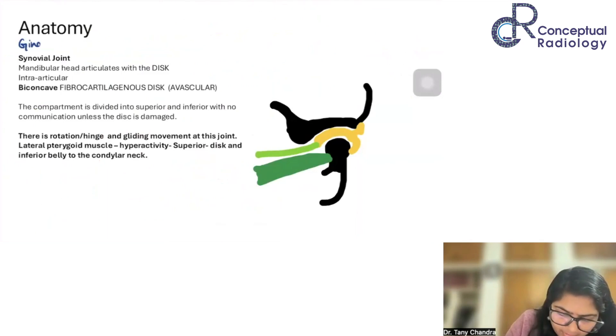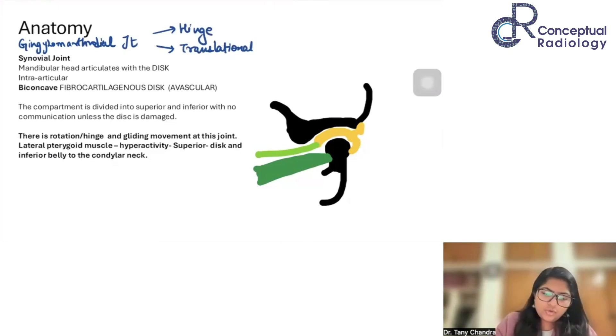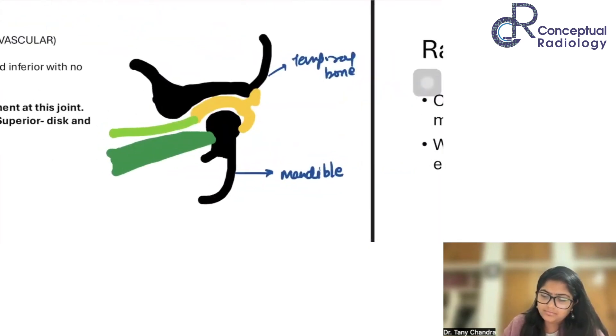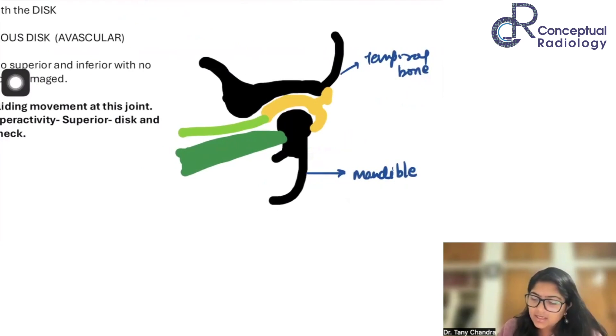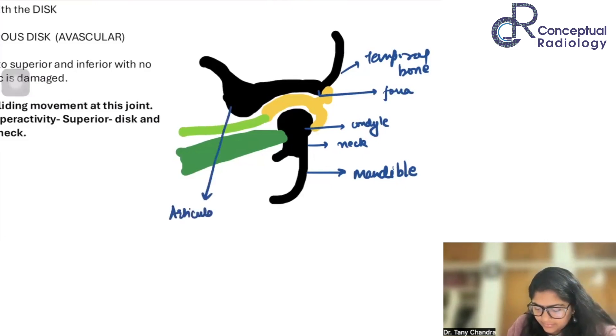This is a gingiloarthrodial joint. Just a fancy word. It just means it has a hinge movement as well as a translational movement. This is the mandible. This is your temporal bone. I hope everybody can well see this. In this, you have the condyle of the mandible and you have the neck. This is the fossa, temporomandibular fossa. This is the articular eminence. And this is the muscle.